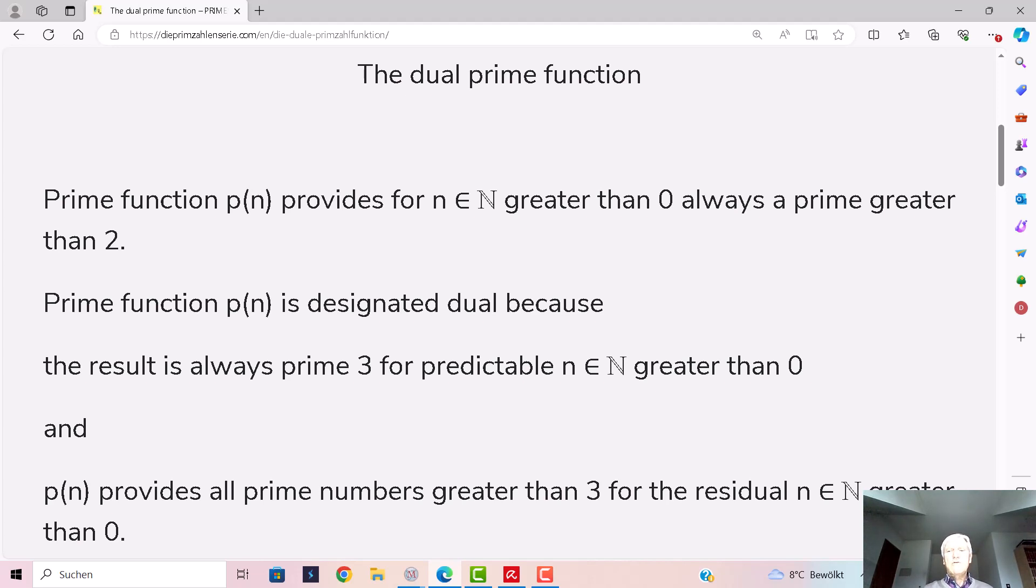where n ∈ ℕ greater than 0. This means all prime numbers in infinite number.